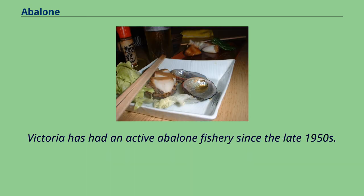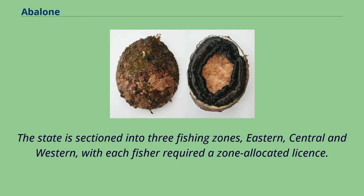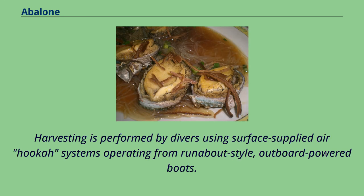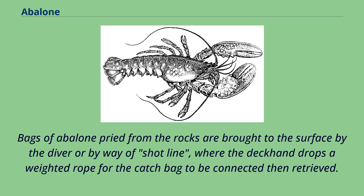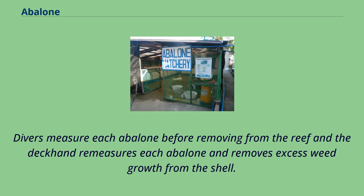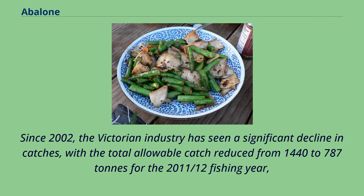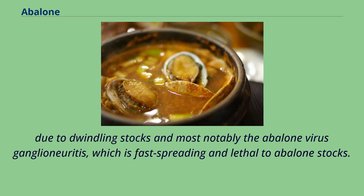Victoria has had an active abalone fishery since the late 1950s. The state is sectioned into three fishing zones — eastern, central, and western — with each fisher required to hold a zone-allocated license. Harvesting is performed by divers using surface-supplied air hookah systems operating from runabout-style, outboard-powered boats. While the diver seeks out colonies of abalone amongst the reef beds, the deckhand operates the boat and stays above where the diver is working. Bags of abalone pried from the rocks are brought to the surface by the diver or by way of shotline. Divers measure each abalone before removing it from the reef, and the deckhand remeasures each abalone and removes excess weed growth from the shell. Since 2002, the Victorian industry has seen a significant decline in catches, with the total allowable catch reduced from 1,440 to 787 tons for the 2011-12 fishing year, due to dwindling stocks and the abalone virus ganglioneuritis, which is fast-spreading and lethal to abalone stocks.